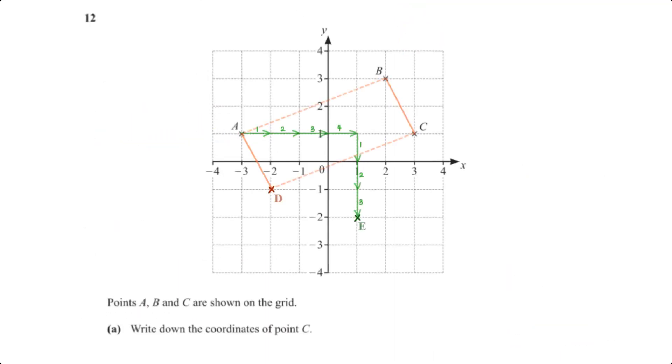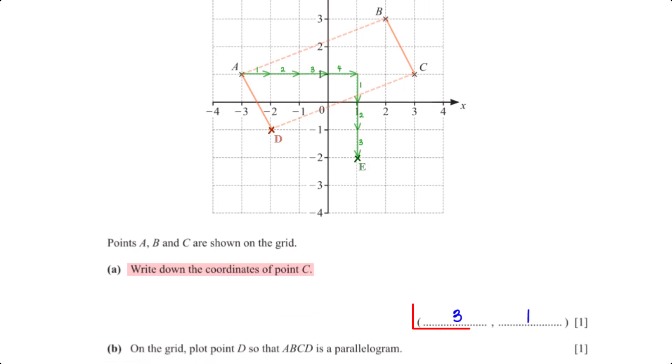Points A, B, and C are shown on the grid. Write down the coordinates of point C. When we map C onto the x-axis, we get 3. And when we map it onto the y-axis, we get 1. So, we have 3, 1.